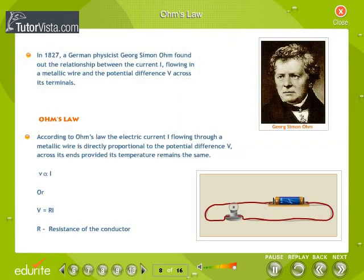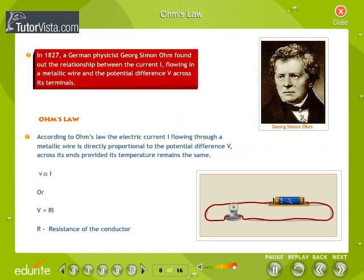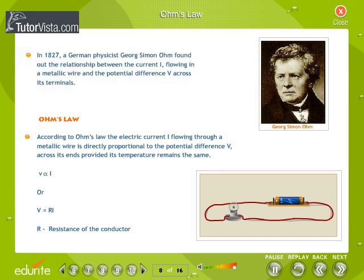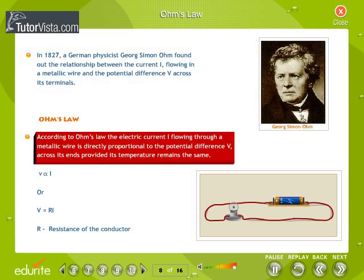Ohm's Law: In 1827, a German physicist, George Simon Ohm, found out the relationship between the current I flowing in a metallic wire and the potential difference V across its terminals.